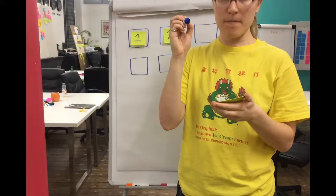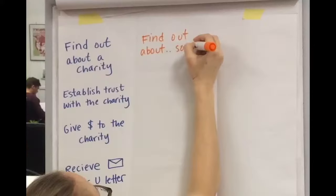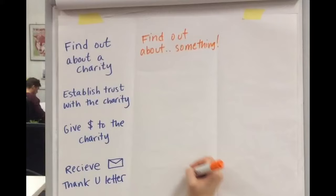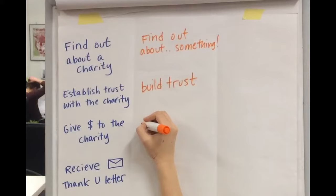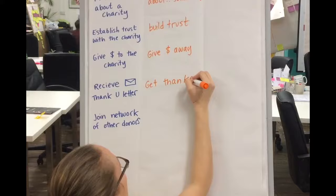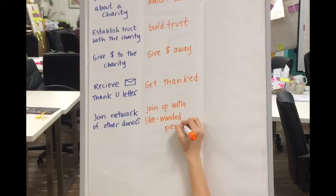Step three: on the middle third of the paper, rewrite each item from your first list in a more simplified way. 'Finding out about a charity' simplified is just 'find out about something.' 'Establishing trust with the charity' becomes just 'build trust.' 'Give money to the charity' becomes just 'give money away.' 'Receive a thank you letter' becomes just 'get thanked.' And 'join a network with other donors to the same charity' becomes just 'join up with like-minded people.'